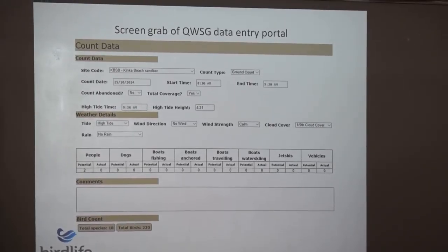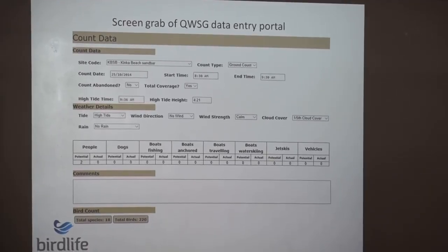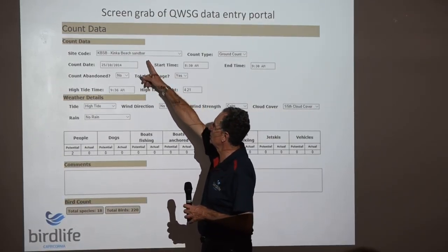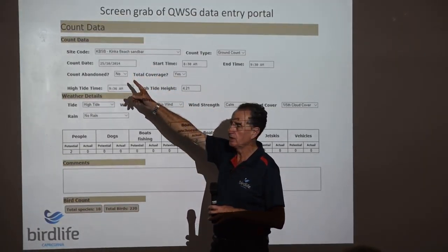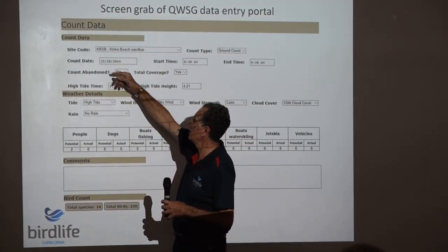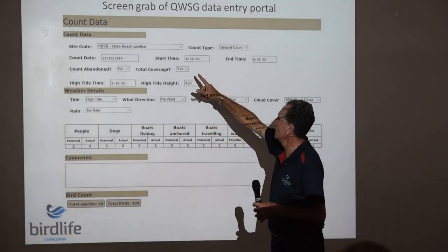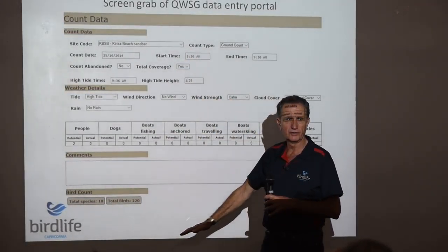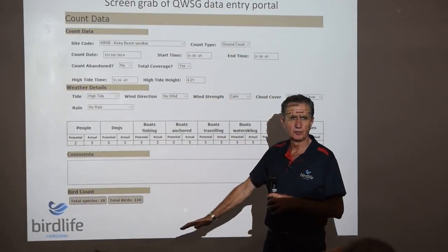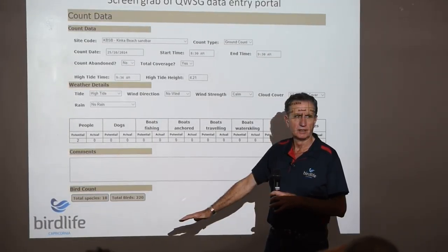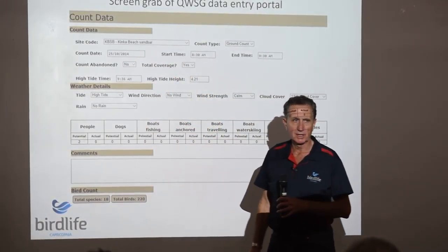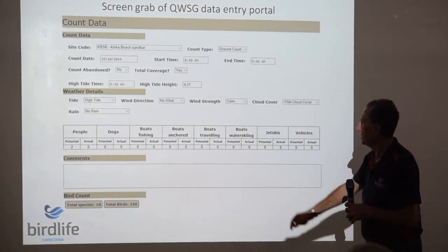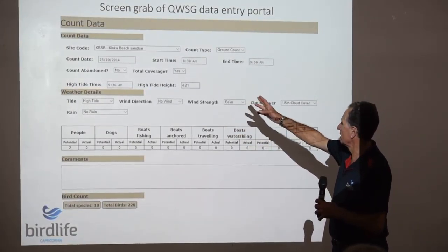This is the WSG data entry portal. There's the site code — Kinga Beach Sandmark, KBSB. When you go in there and click on that, it brings down a list of all of the shorebird sites in Queensland, and you just select the one that you're doing, and then enter all the other data.